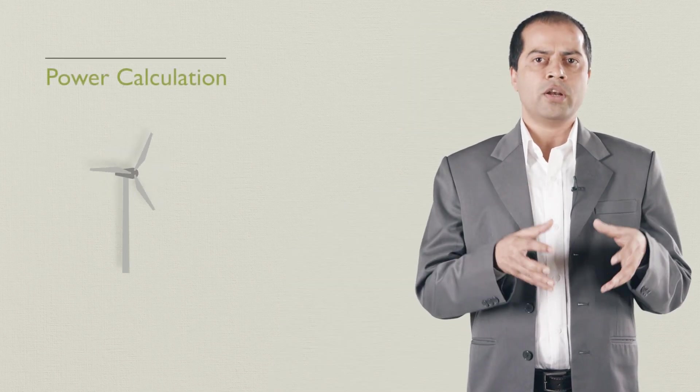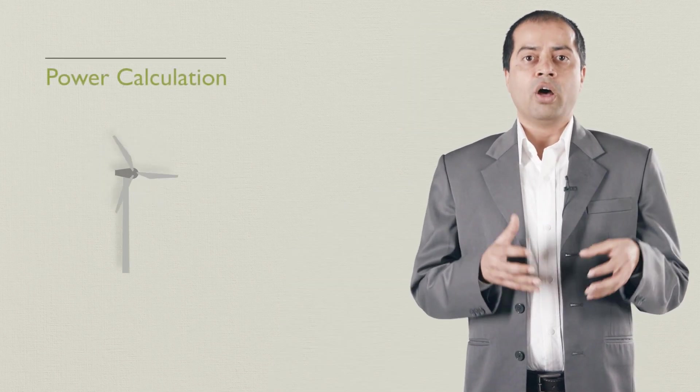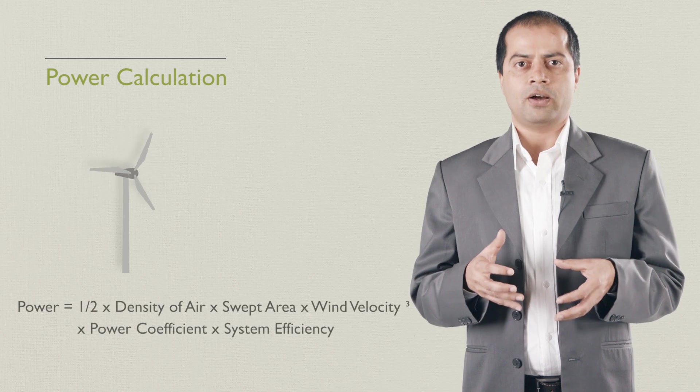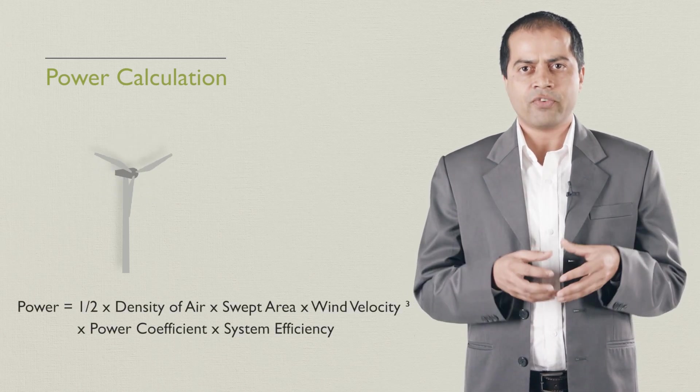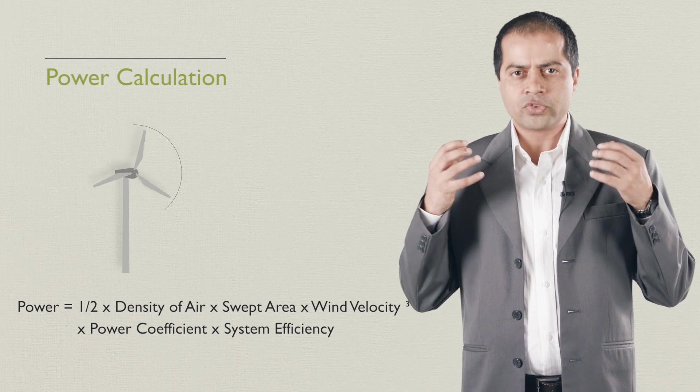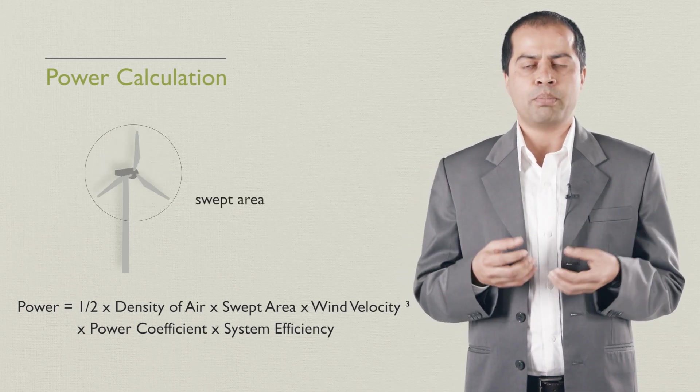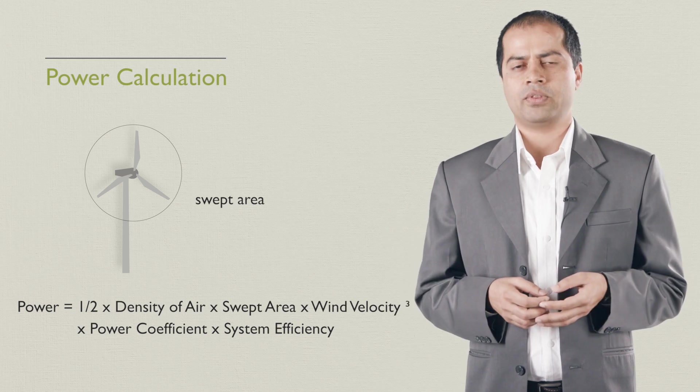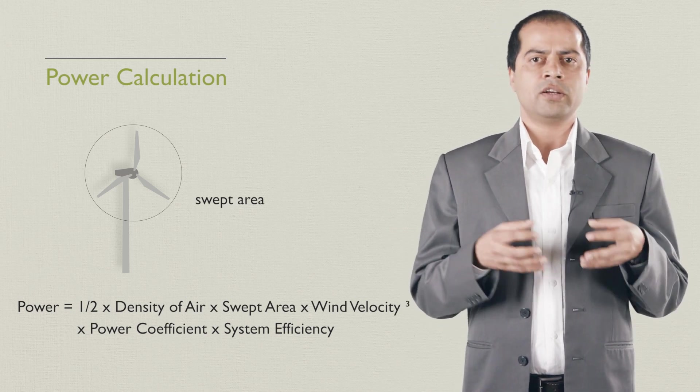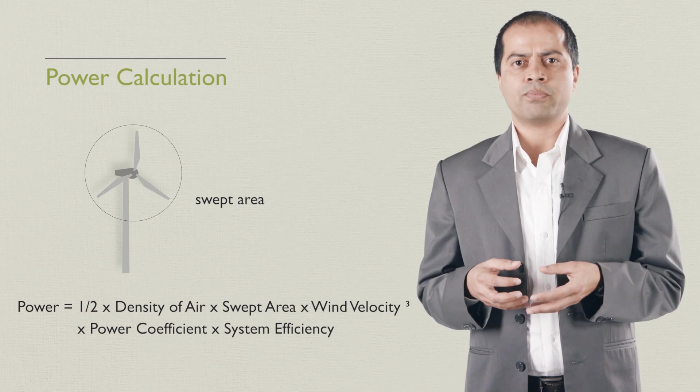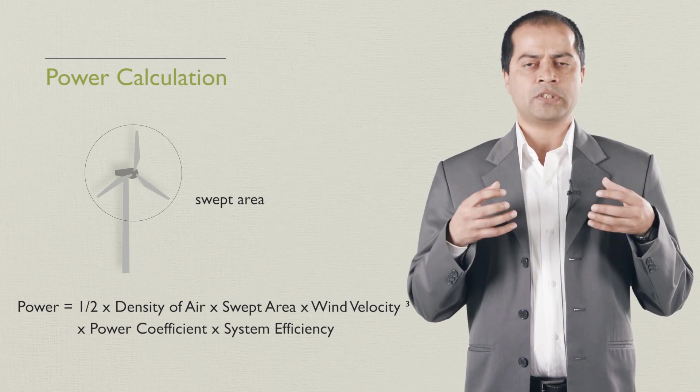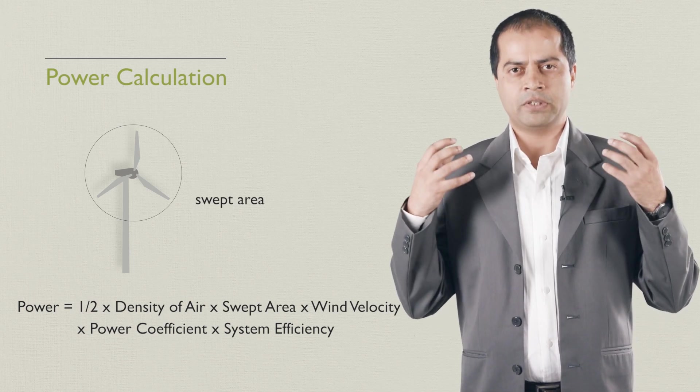On-site wind measurement is necessary to estimate the power output from the wind turbine. Power from wind is proportional to the power of three of the wind speed. Another parameter you need to know is swept area, which is the area covered by the blades while rotating. In the reader document, you find details on the real power output and energy output from a specific wind turbine for a specific site.